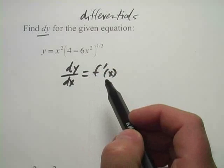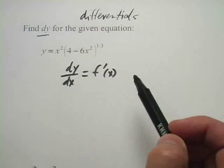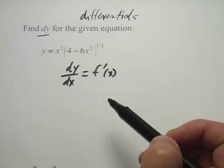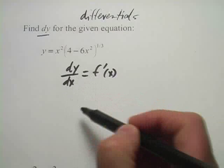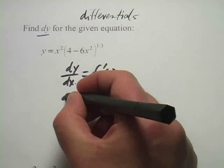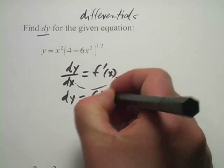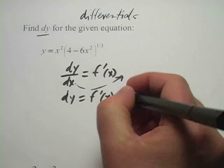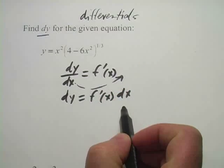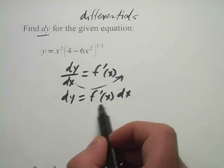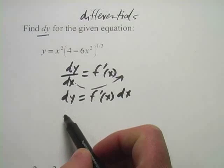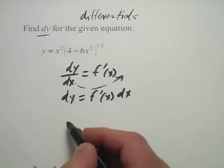These things are the same. If you look at just the dy part and just the dx part, that's what we call the differential. We could rewrite this as the differential of y equals the derivative of the function times the differential of x.